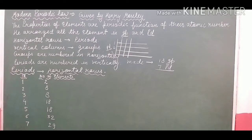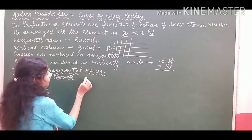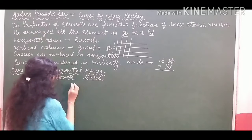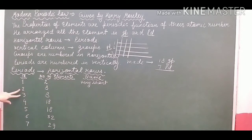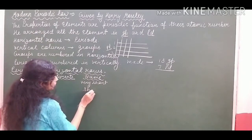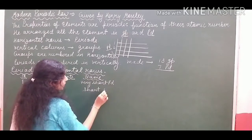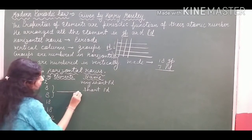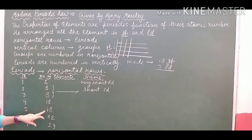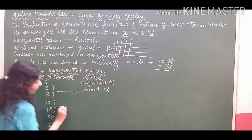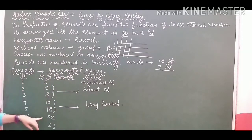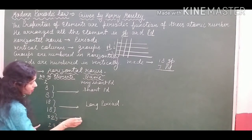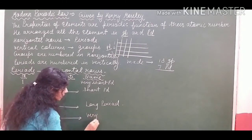Now I am going to tell you what names were given to each specific period. The first period, because it has only 2 elements, was given the name 'very short period.' The second and third periods both have the same number of elements, so they were given the name 'short period.' The fourth and fifth periods both have 18 elements each, so they were considered 'long periods.' The sixth period, having the maximum number of elements, was given the name 'very long period.'